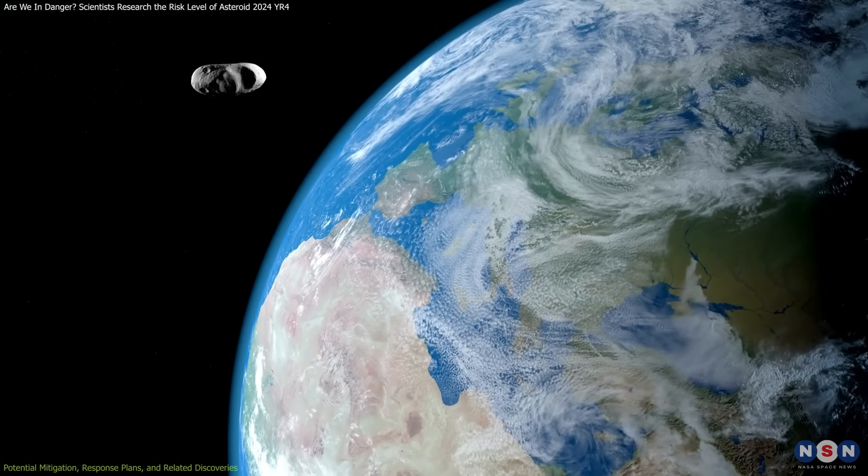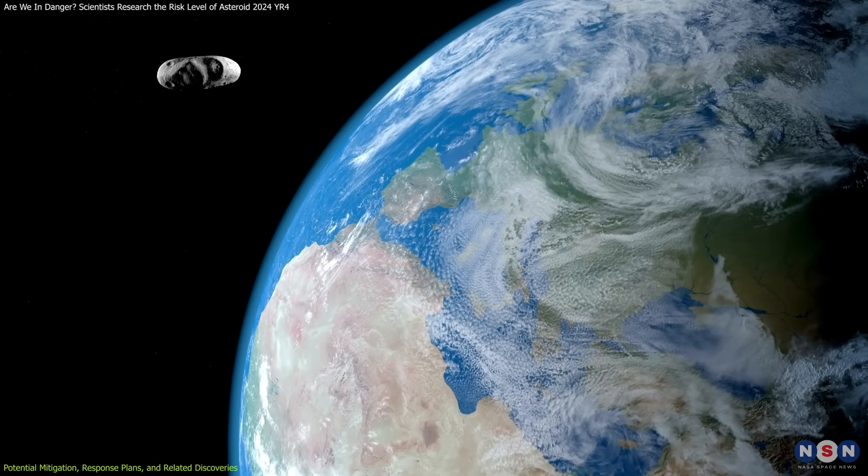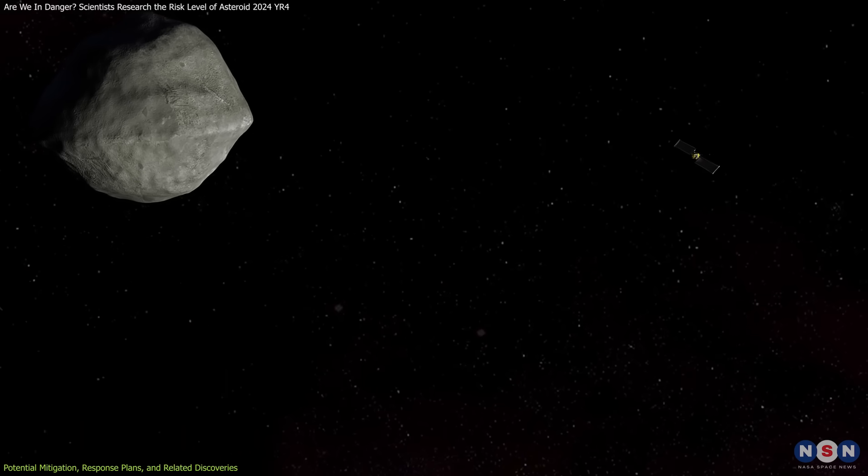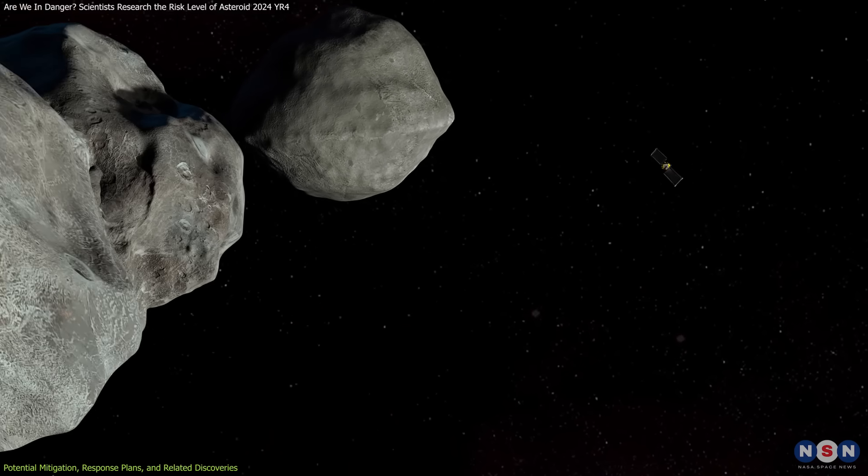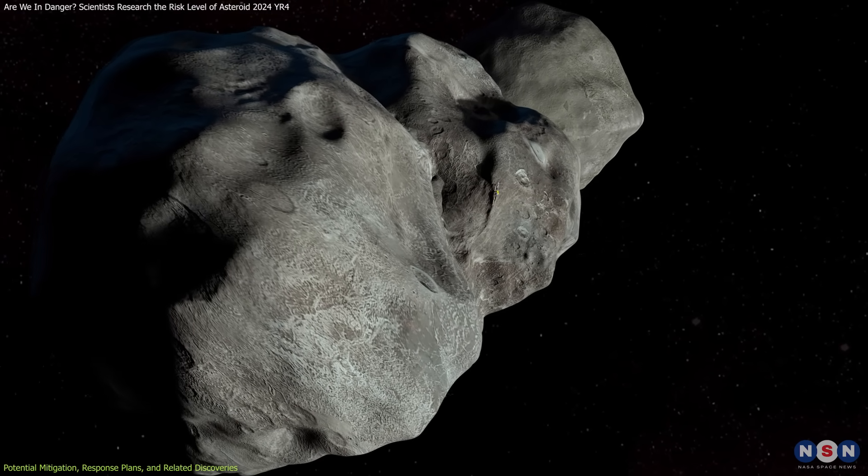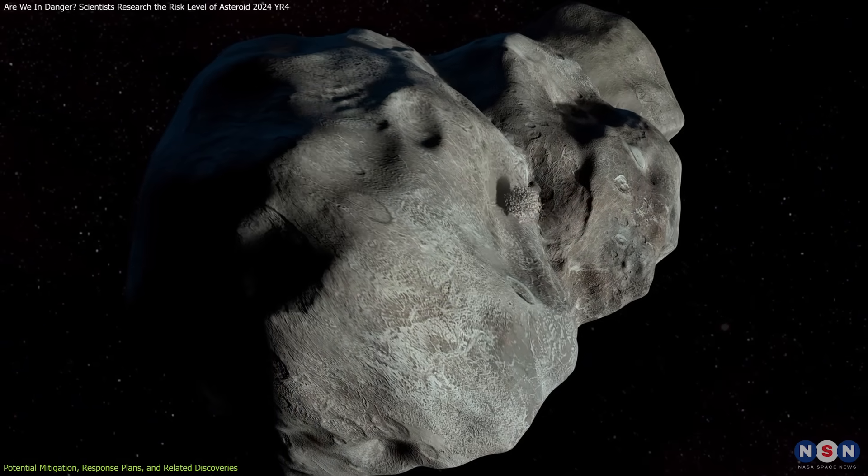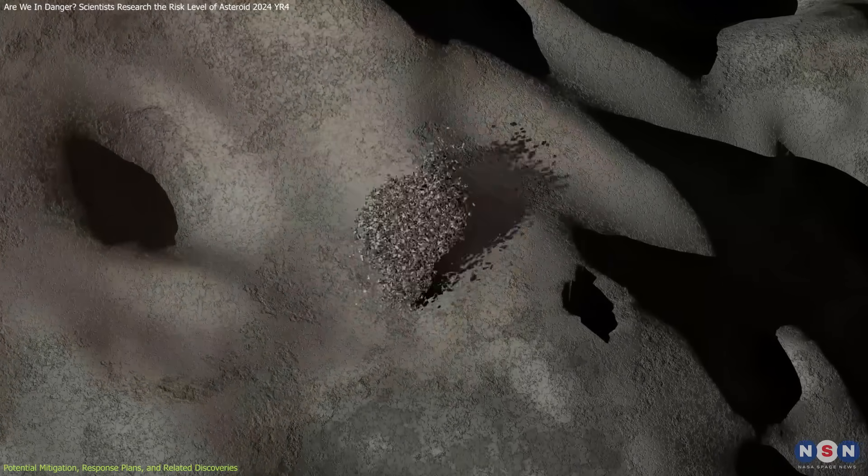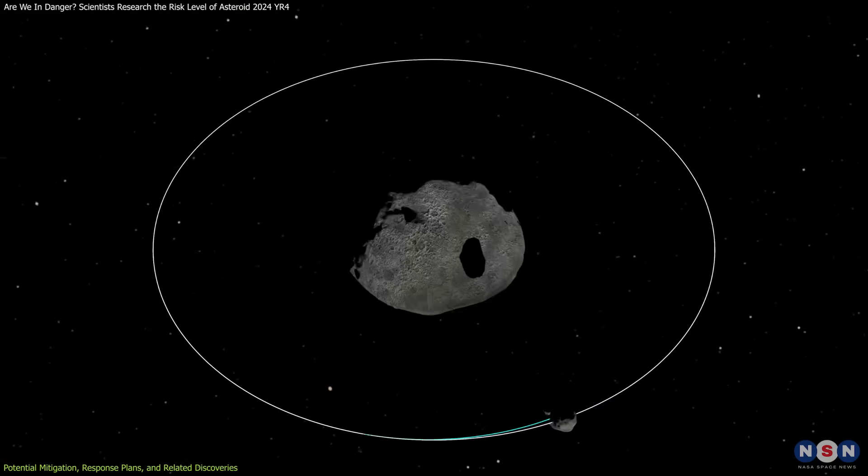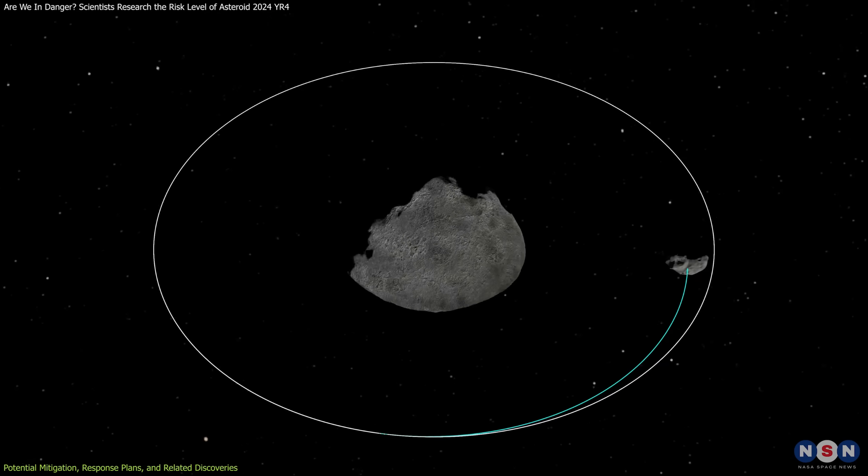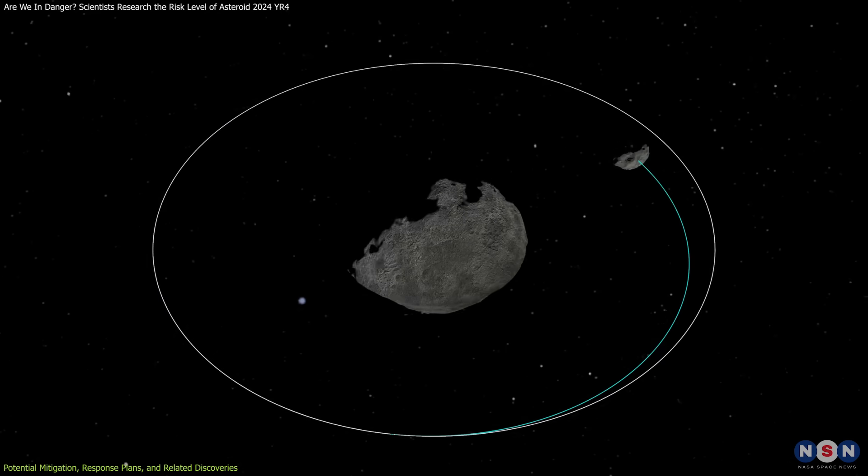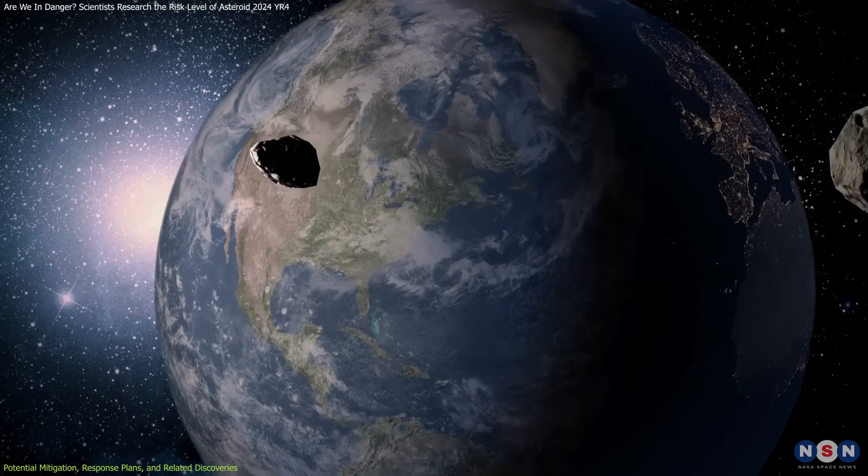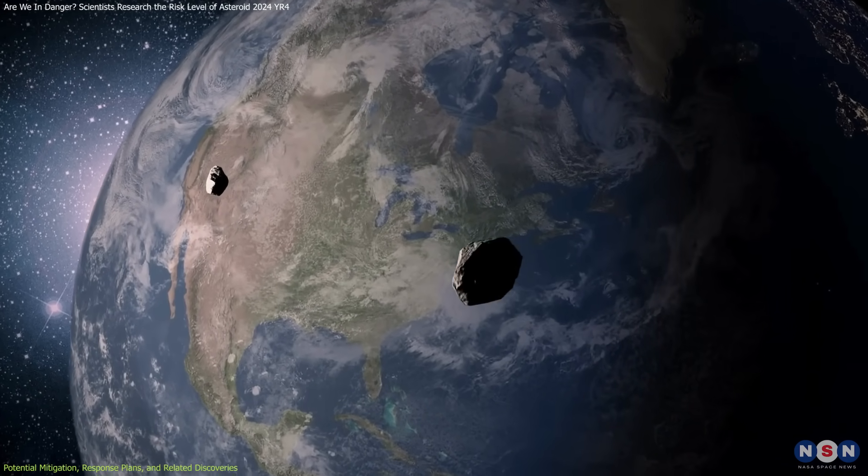One of the most promising mitigation strategies is the kinetic impactor technique, which was successfully demonstrated by NASA's DART mission in 2022. In this approach, a spacecraft is deliberately crashed into an asteroid to alter its trajectory. The evidence from DART shows that even a relatively small impact can produce measurable changes in an asteroid's course if executed with precision, which offers concrete proof that we have the capability to deflect an object long before it becomes a danger to Earth.